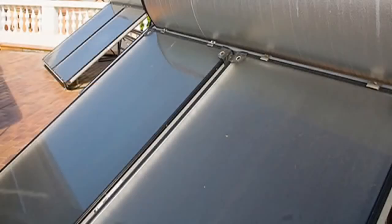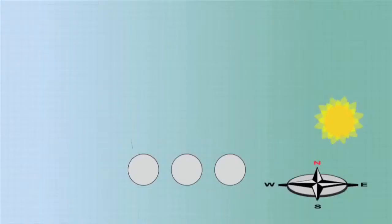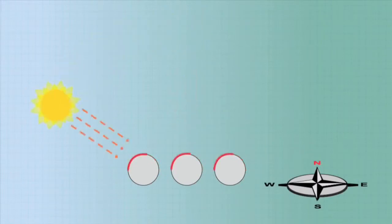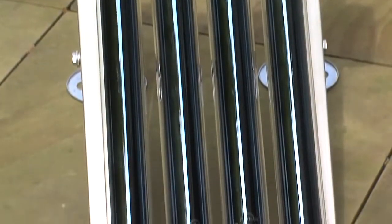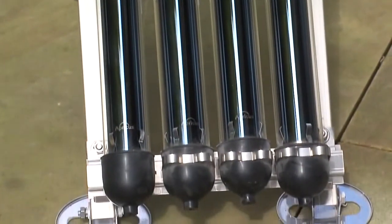There are two collector types to choose from, flat plate and evacuated tubes. Evacuated tubes have the advantage of receiving perpendicular radiation for a greater part of the day. This, combined with their vacuum insulation, means good winter performance.